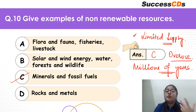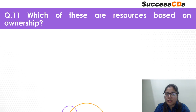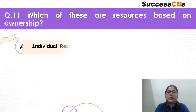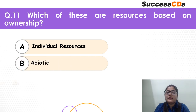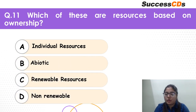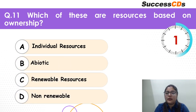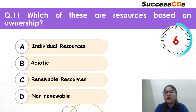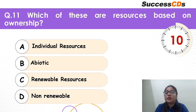We must use them judiciously. Coming to question 11: which of these are resources based on ownership? Is it individual? Is it abiotic? Is it renewable? Or is it non-renewable? Time begins — again a very very easy question. Please answer in the format that has been told to you.